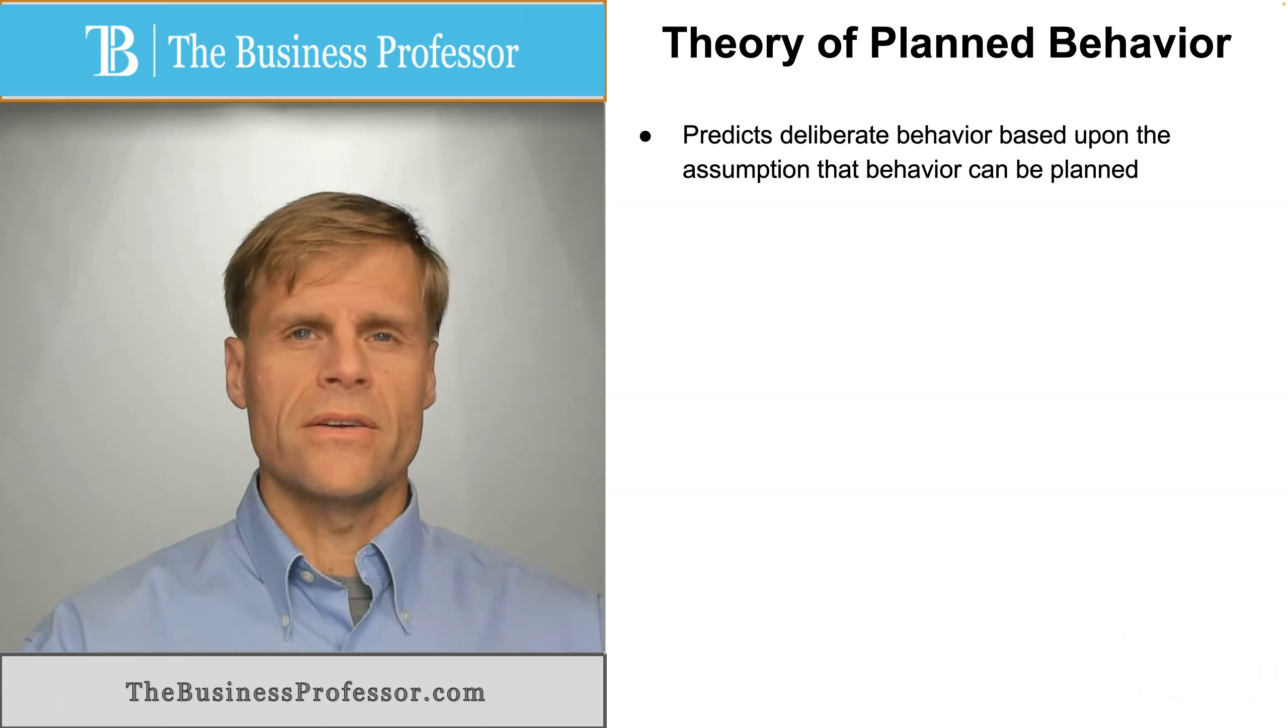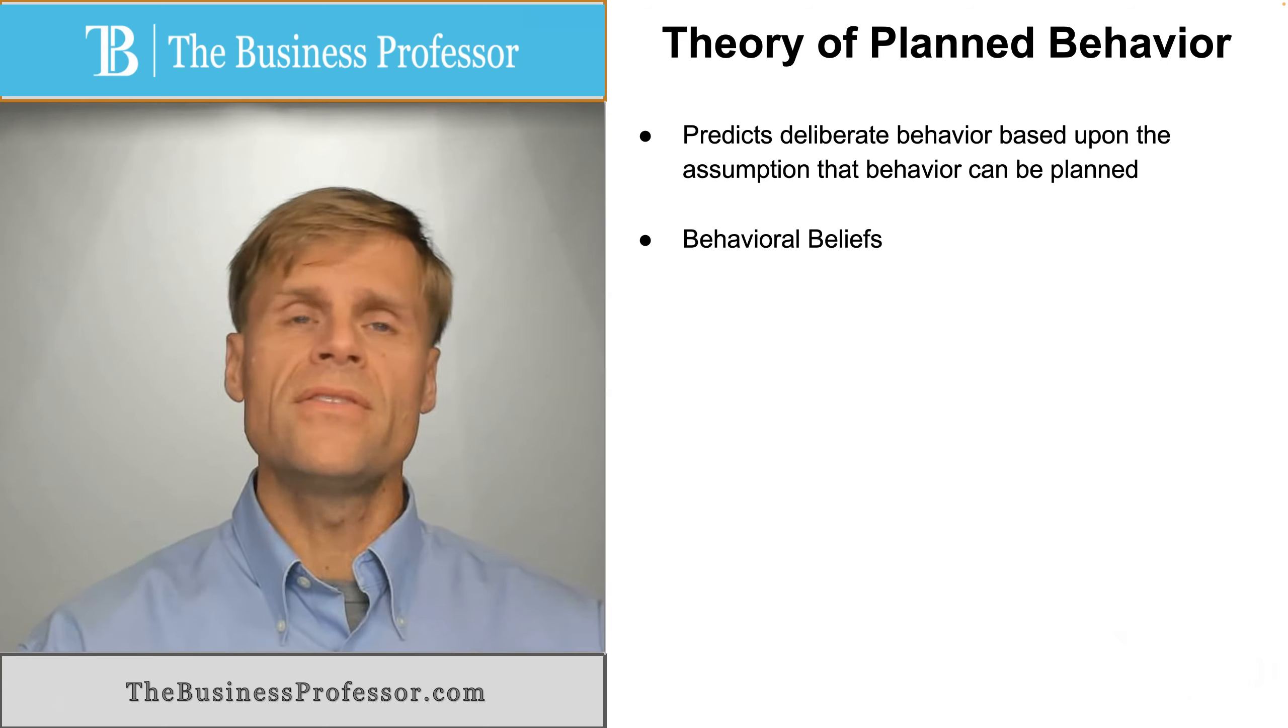The cornerstone of this theory is three beliefs concerning behavior. The first behavioral belief is that we can control our behavior and the outcome of our behavior. That is, we know that there will be some likely result from our behavior.